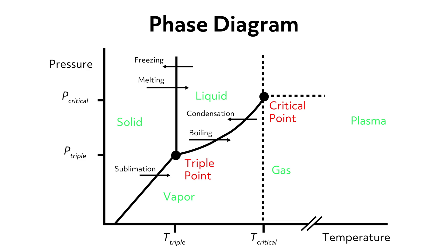In addition to temperature changes, you can prompt a phase transition by adjusting the pressure. The way a substance changes with pressure and temperature is often mapped out in a phase diagram. While these are material-specific, in general, substances tend to be solids at low temperatures and high pressures, gases at high temperatures and low pressures, and liquid at intermediate temperatures and pressures. Since most of us encounter only standard pressure and temperatures, we often think of materials as always being in a specific state of matter. For example, most of us think of salt and metals as being solids. But as you can tell from the graph, it is possible to convert between phases — it just might require extreme temperatures and pressures.